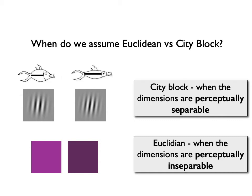Keep in mind that sometimes people, because they assume city block space, appear not to be making similarity judgments according to geometric and psychological space locations. This will come back when we talk about triangle inequality in a few slides.